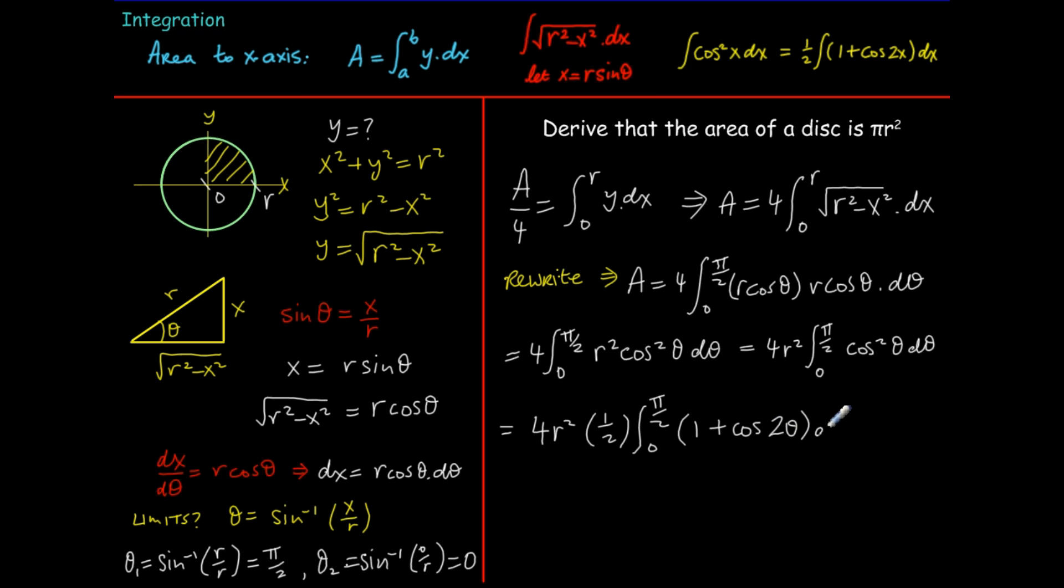We're finally ready to actually perform the integration. Half of four is two so I have two r squared. If we integrate one with respect to theta we get theta and the integral of cos two theta is sine two theta divided by two, and that's going to put in the limits pi over two and zero.